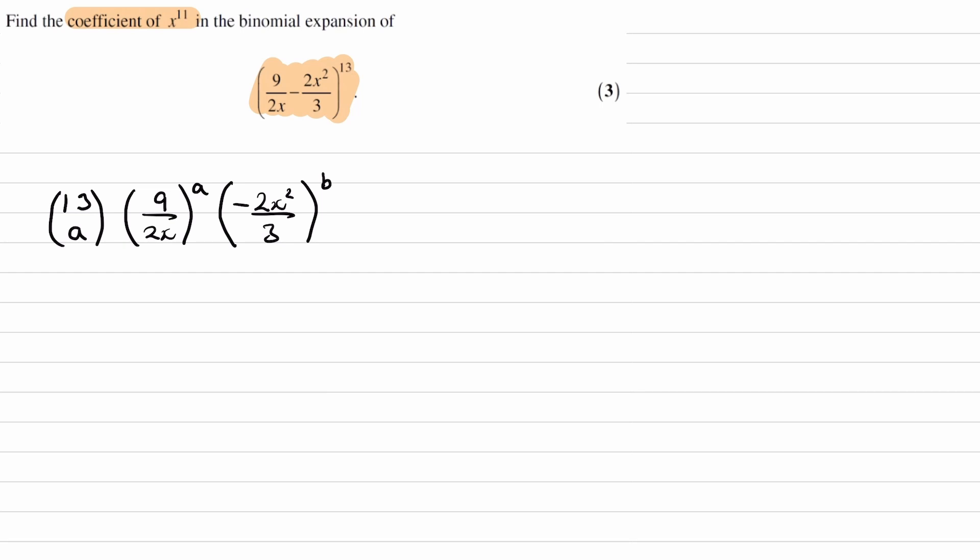And we know that from binomial expansion, the addition of these two powers should be 13. So we know that a plus b is 13.